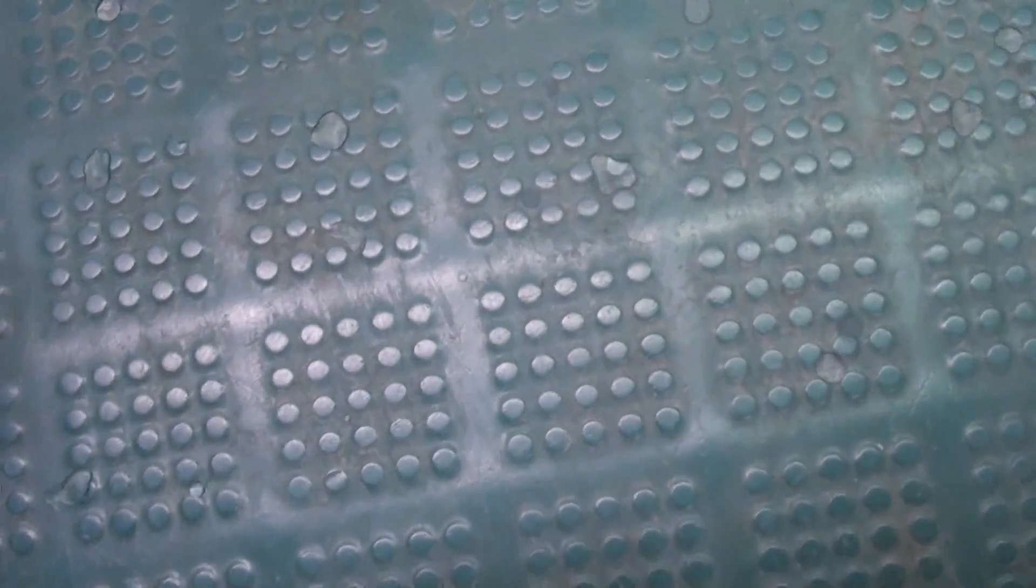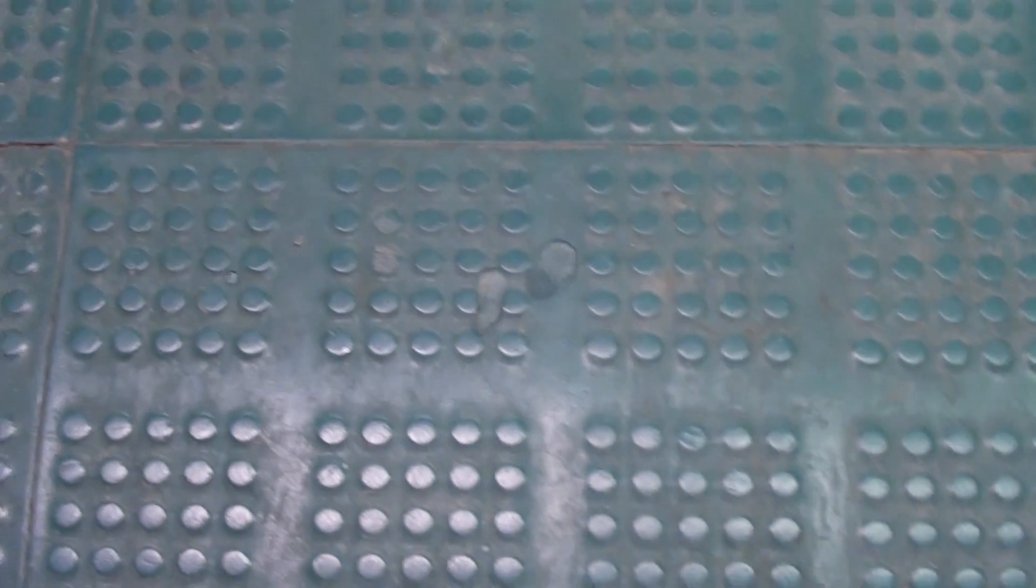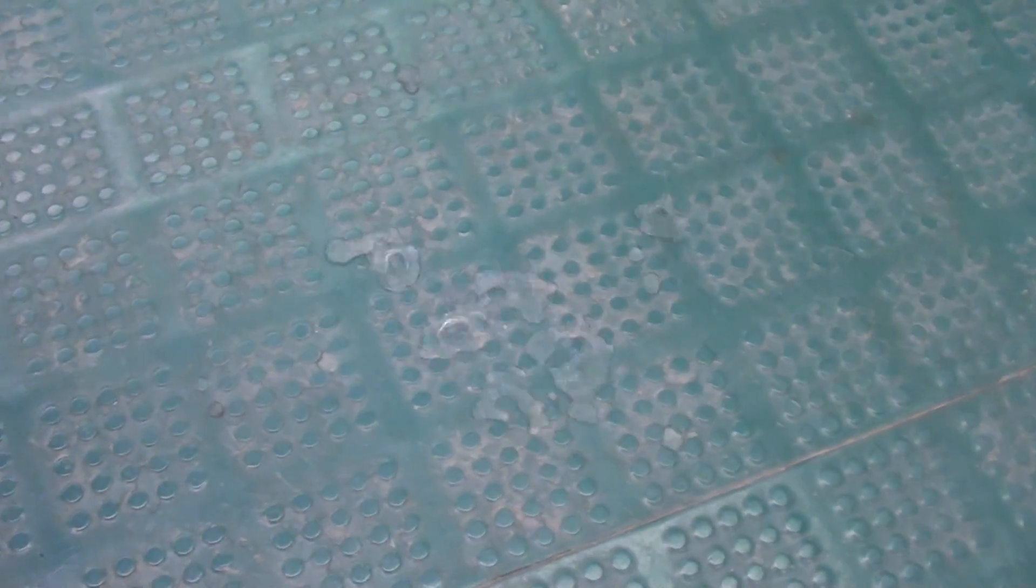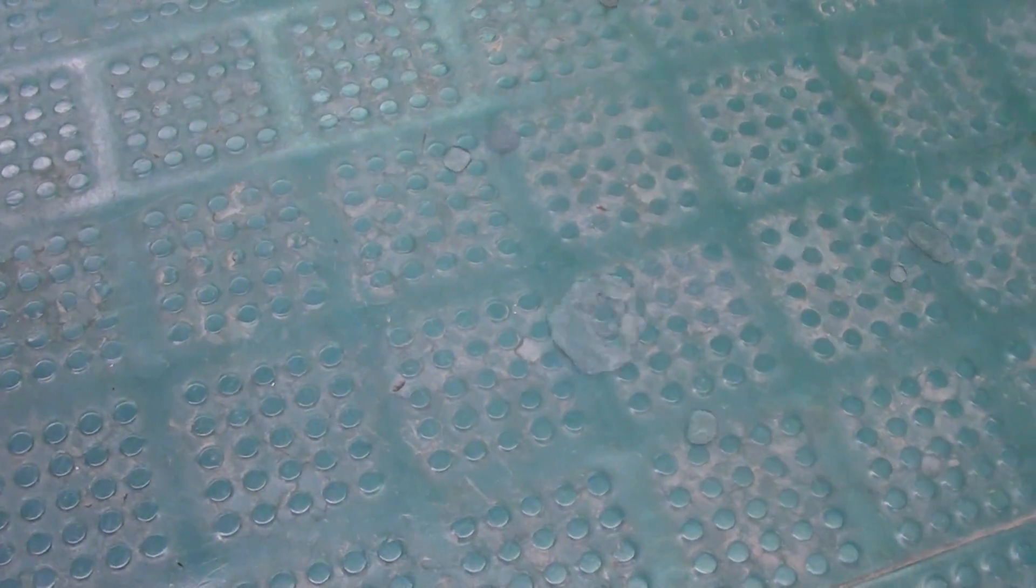Liquid nitrogen boils at minus 196 Celsius and this laboratory floor is at room temperature. So from the liquid nitrogen's perspective the floor is super hot. Here are some drops of liquid nitrogen rolling around on the floor just like the water on the hot plate. The Leidenfrost effect protects the liquid nitrogen from being instantly vaporized and consequently the floor from being instantly frozen.